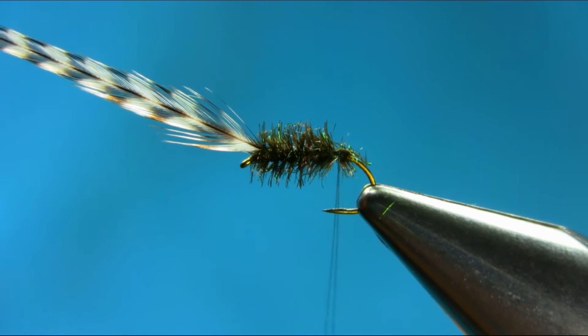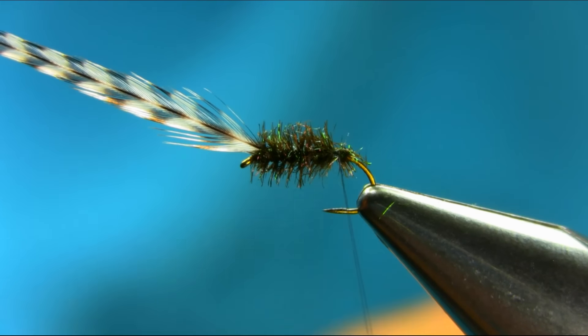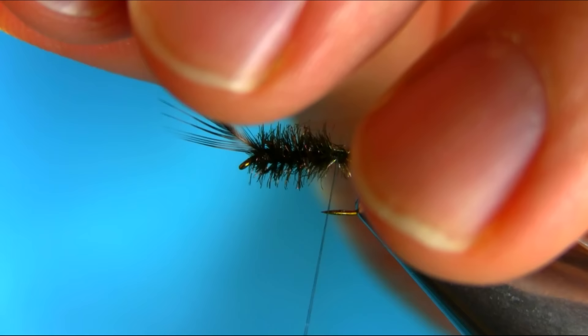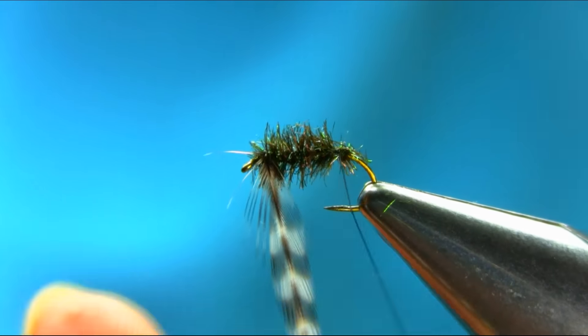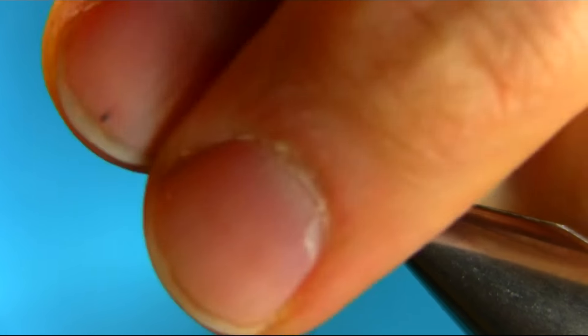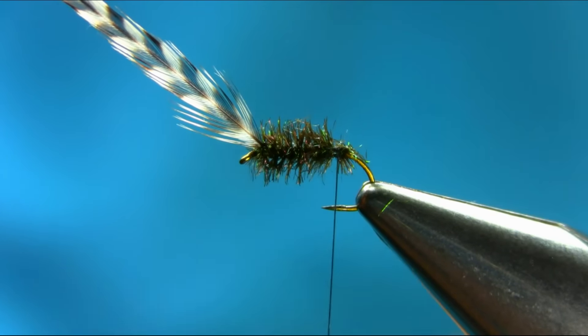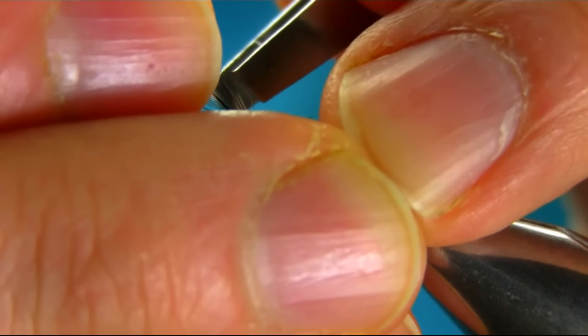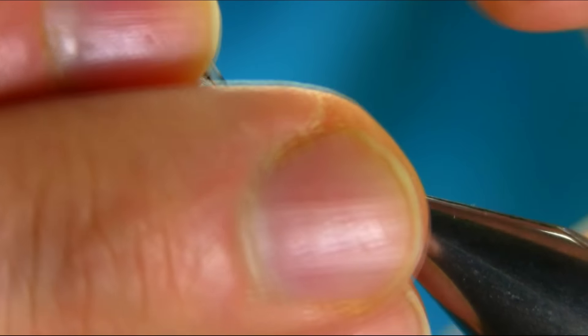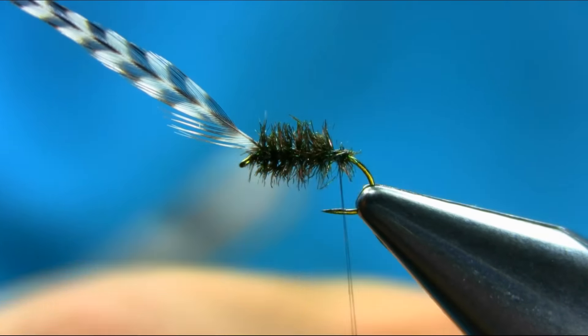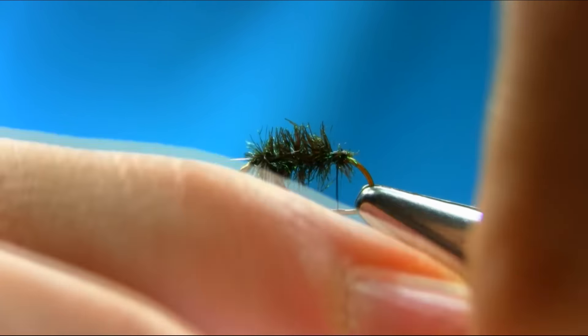And if you want to use a hackle plier you'll find it easier. What I'll do is just take some, if you take some of this fiber off from this side, then it normally sits properly.